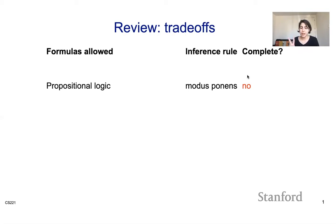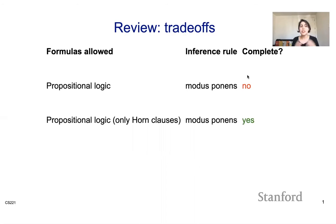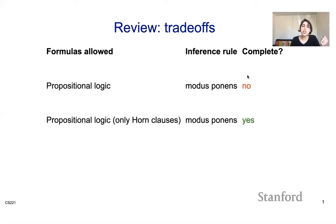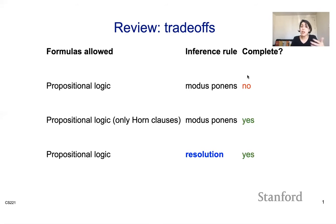We talked about two ways of solving that. The first idea was, instead of looking at all of propositional logic, let's look at a subset of it — specifically propositional logic with only horn clauses. We defined horn clauses during the last module, and if I apply modus ponens on horn clauses, I get soundness and completeness. The other option is: what if I want to look at all of propositional logic? Can I make my inference rule a little bit more powerful? In this module, we're talking about resolution as a way of getting both soundness and completeness.